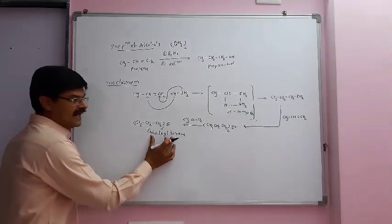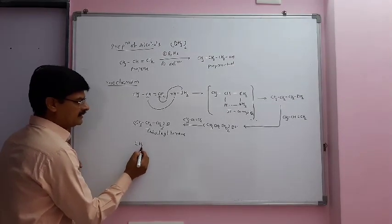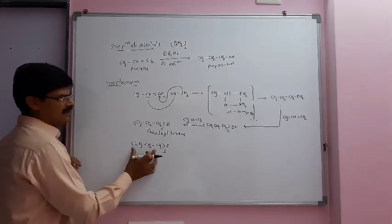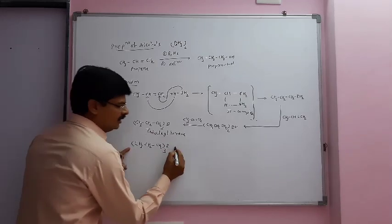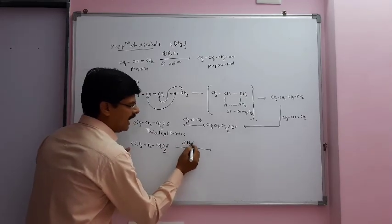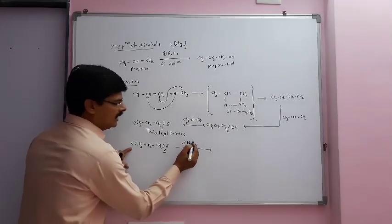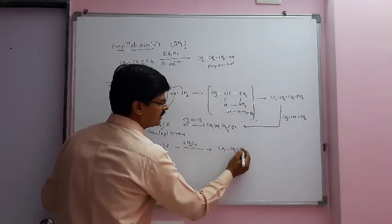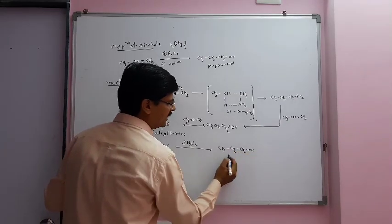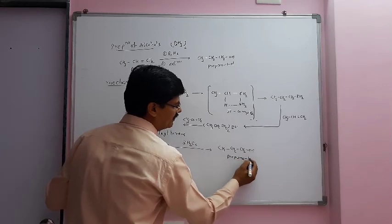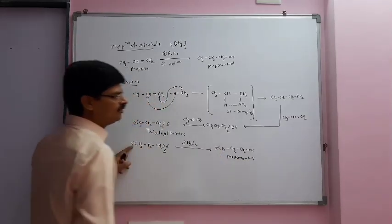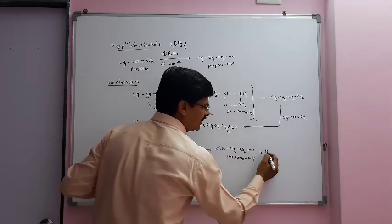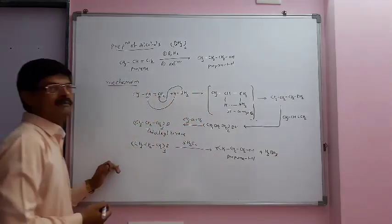Now this trialkylborane (CH3CH2CH2)3B on oxidation with alkaline hydrogen peroxide gives the final product CH3-CH2-CH2-OH, that is propan-1-ol. Three moles of propan-1-ol will be produced, along with H3BO3 as a byproduct.